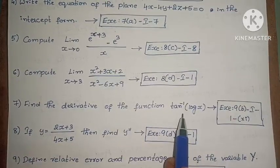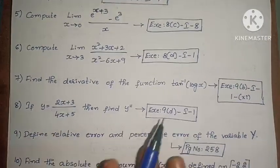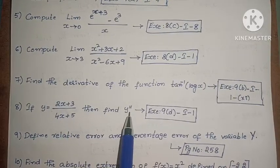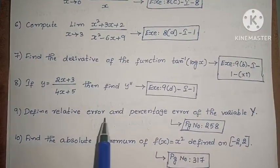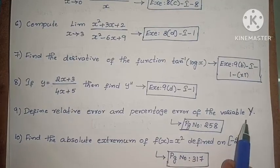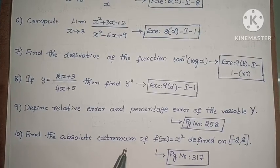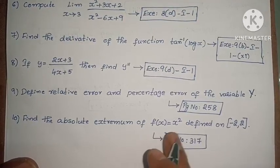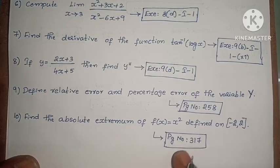Next, find the derivative of the function tan inverse of log x. Exercise 9a, first roman law, eleventh one. Next, if y equals 2x plus 3 divided by 4x plus 5, then find y double dash. Exercise 9d, first roman law, first one. Next, define relative error and percentage error of the variable y. Page number 258, textbook. Choose the definitions. Find the absolute extremum of f of x equals x squared defined on closed interval minus 2, 2. Page number 317, example problem.